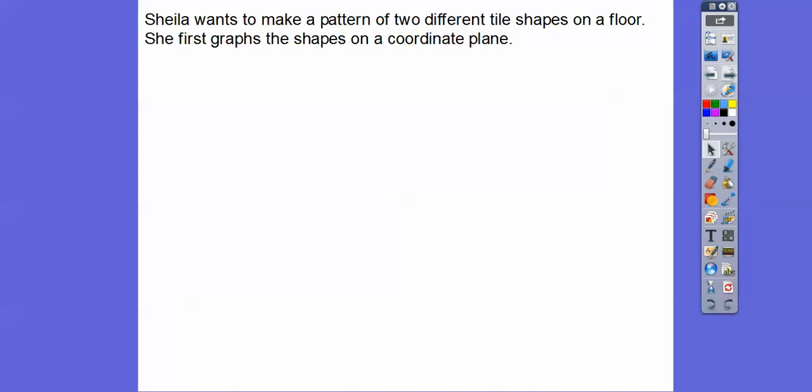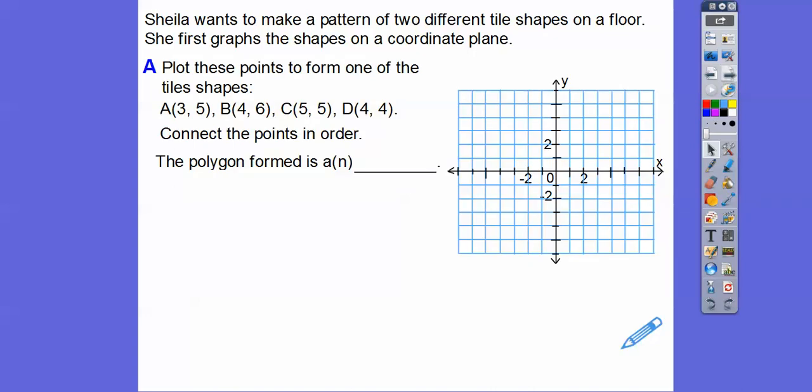So let's do an example here. Sheila wants to make a pattern of two different tile shapes. Now there's a picture in the book. I didn't like the picture, so I didn't copy and put that in here. So she first graphs the shapes on a coordinate plane. So let's plot these points right here. So we'll plot 3, 5, and then 4, 6, 5, 5, and 4, 4. And we're going to connect them as we go along.